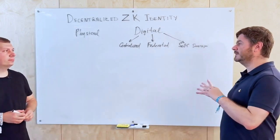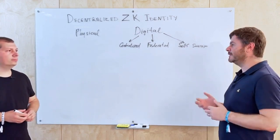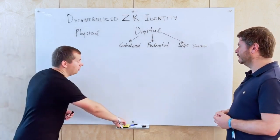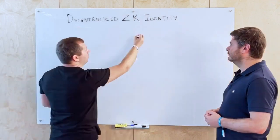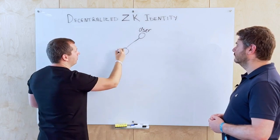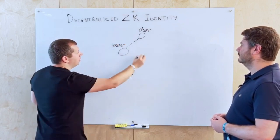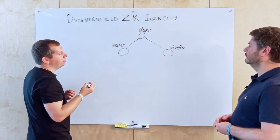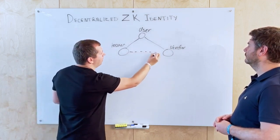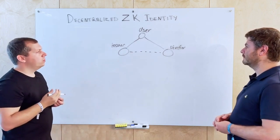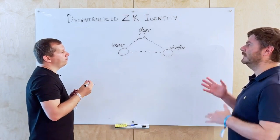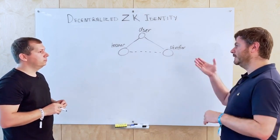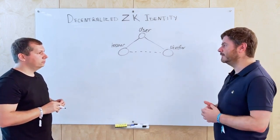We call this the triangle of trust. We have a user, an issuer, and a verifier. Between the issuer and verifier there is a trust link — the verifier needs to trust the issuer. Like with a passport: I trust that the US government issued the passport and verified the date of birth. With digital self-sovereign identities, you can be sure a claim is correct just by checking digital signatures rather than visually inspecting a document.